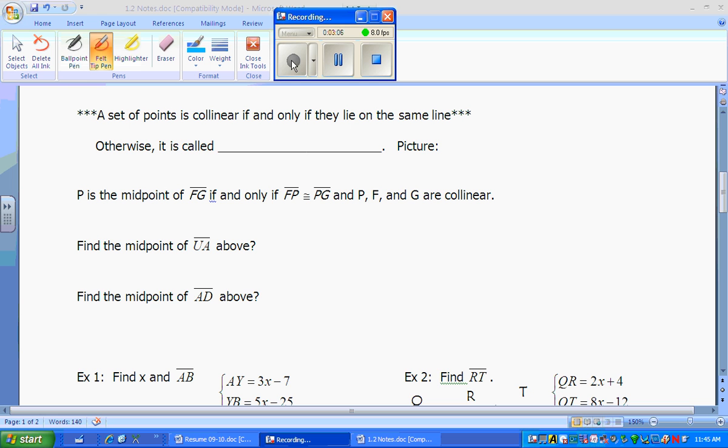We're going to switch gears and talk about the idea of collinear. A set of points are collinear if and only if they lie on the same line. Otherwise, they are called non-collinear.